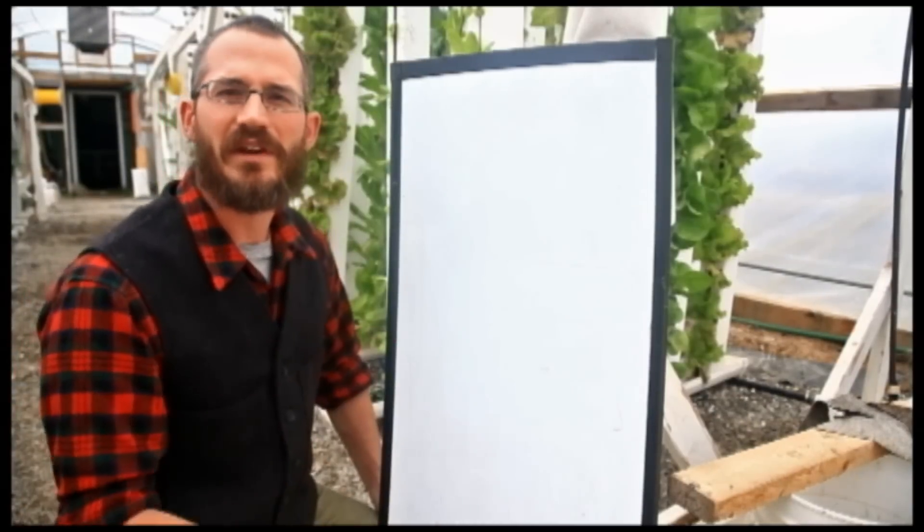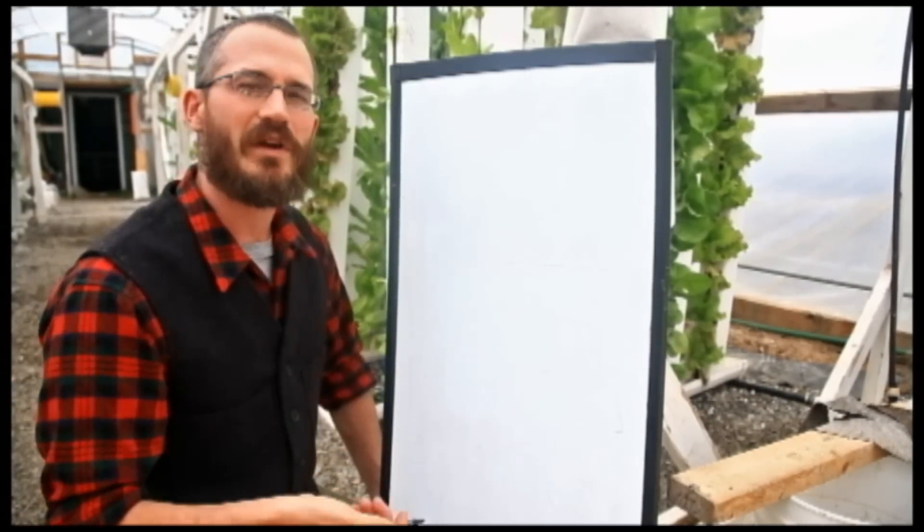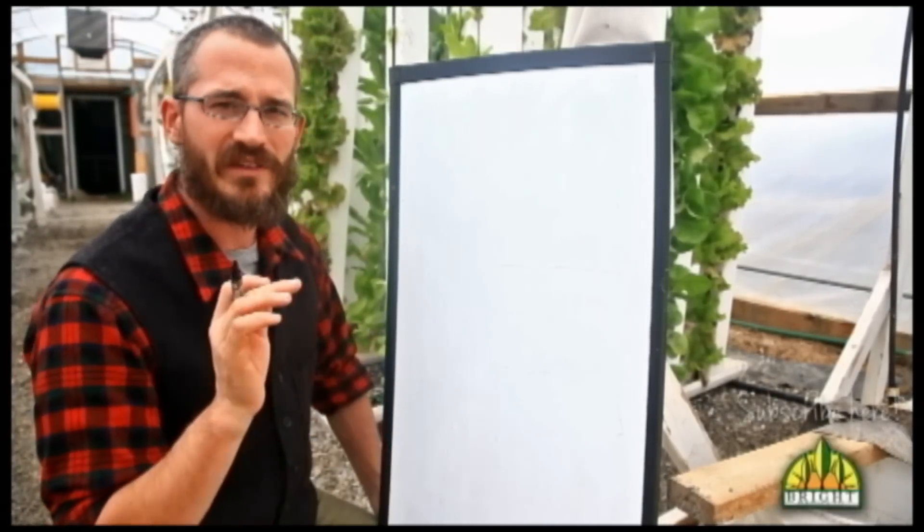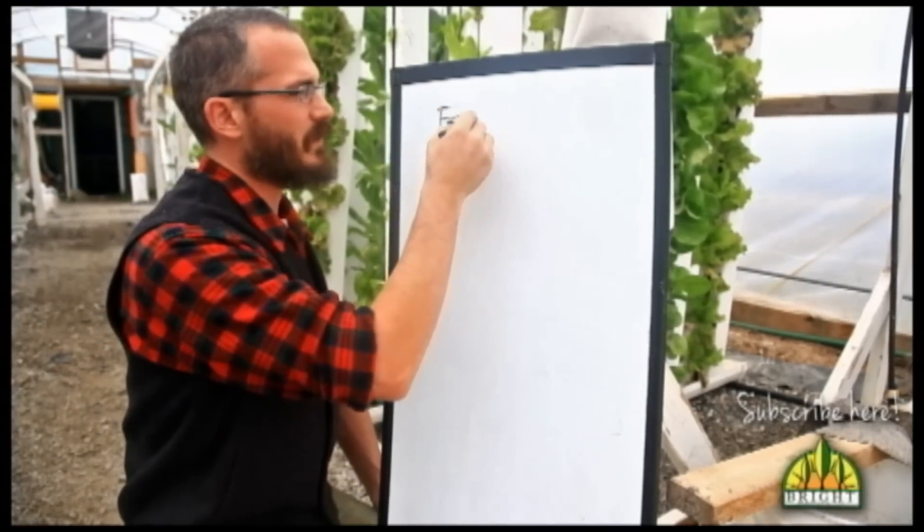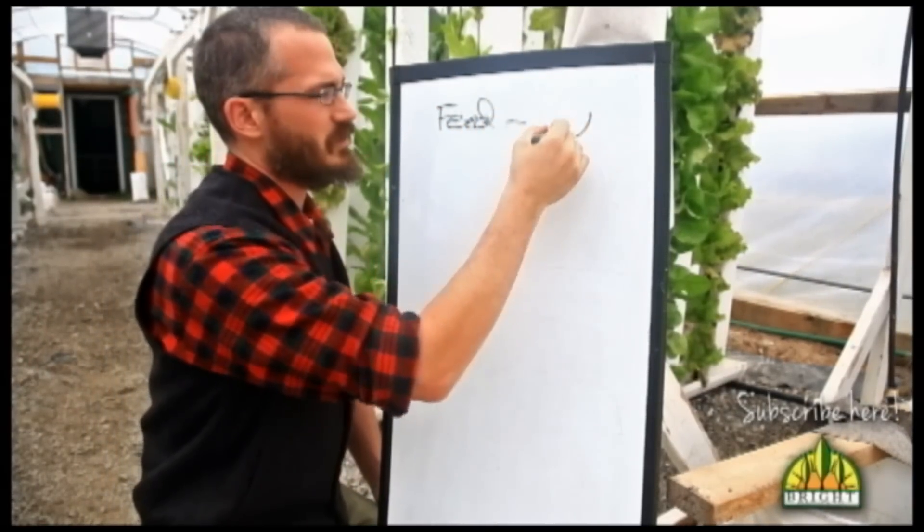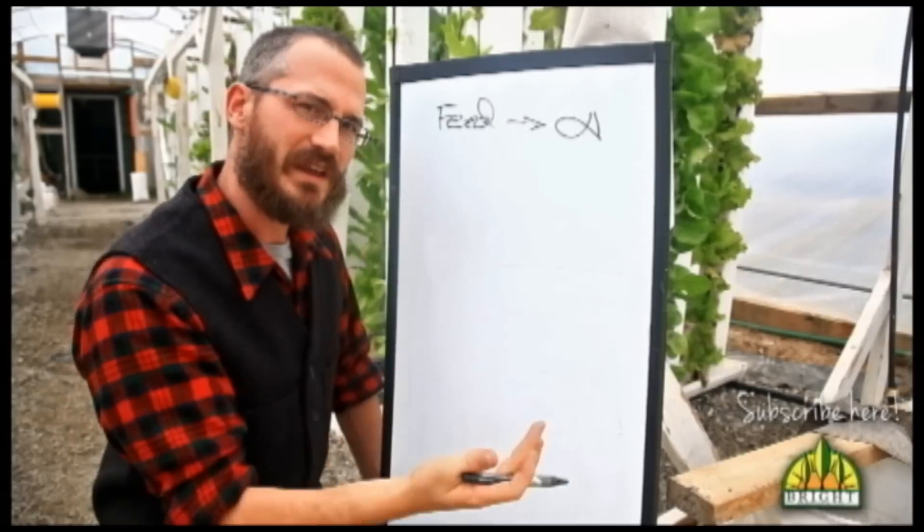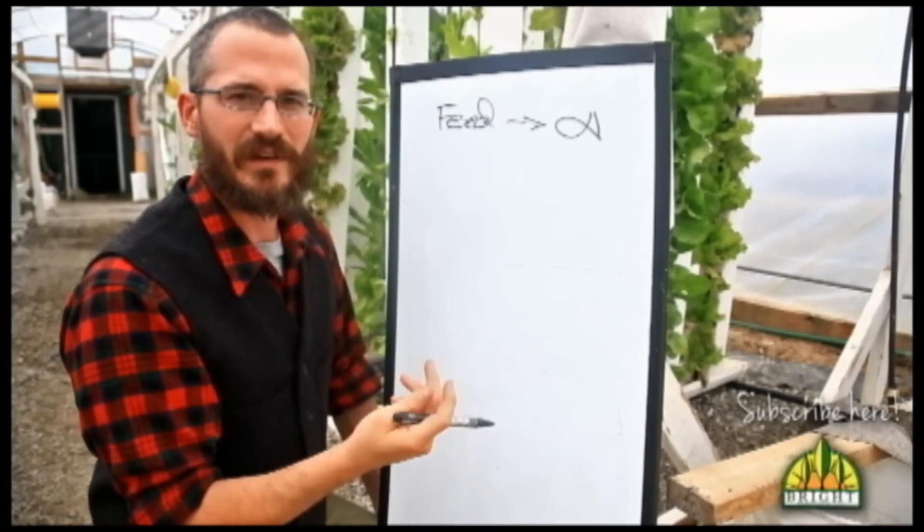Before we get started, we need to understand that all of our nutrients come into our system for the most part as an organic solid. Feed goes into the system and it goes to our fish, and our fish are either eating this feed or they're not eating this feed.